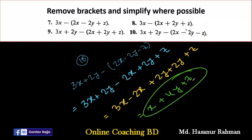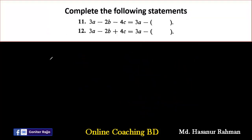Number 10: 3x plus 2y minus (2x minus 2y minus z). Removing brackets: minus into minus 2y gives plus 2y, minus into minus z gives plus z. Rearranging: 3x minus 2x equals x, 2y plus 2y equals 4y, plus z. So x plus 4y plus z is the answer of number 10.